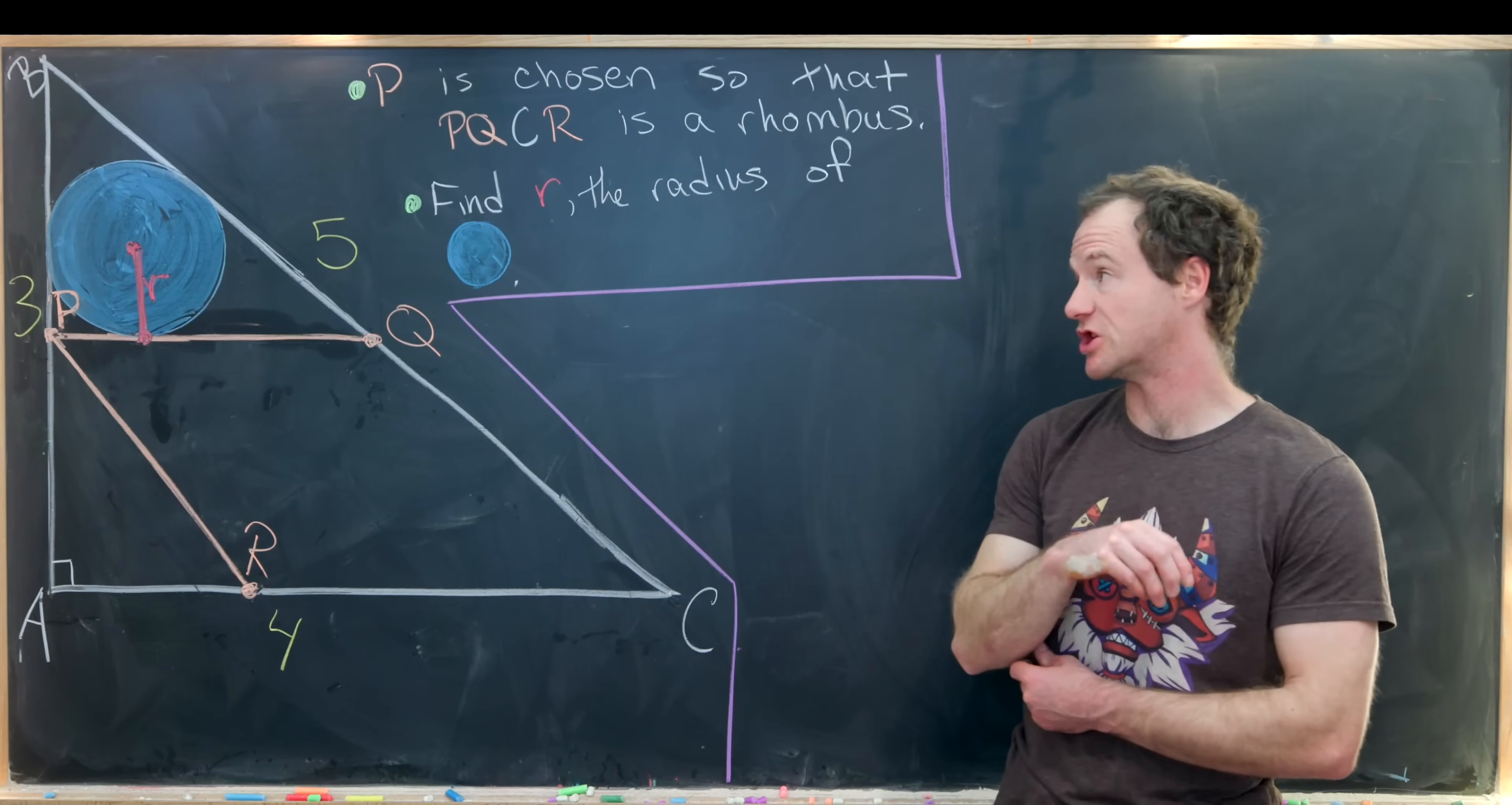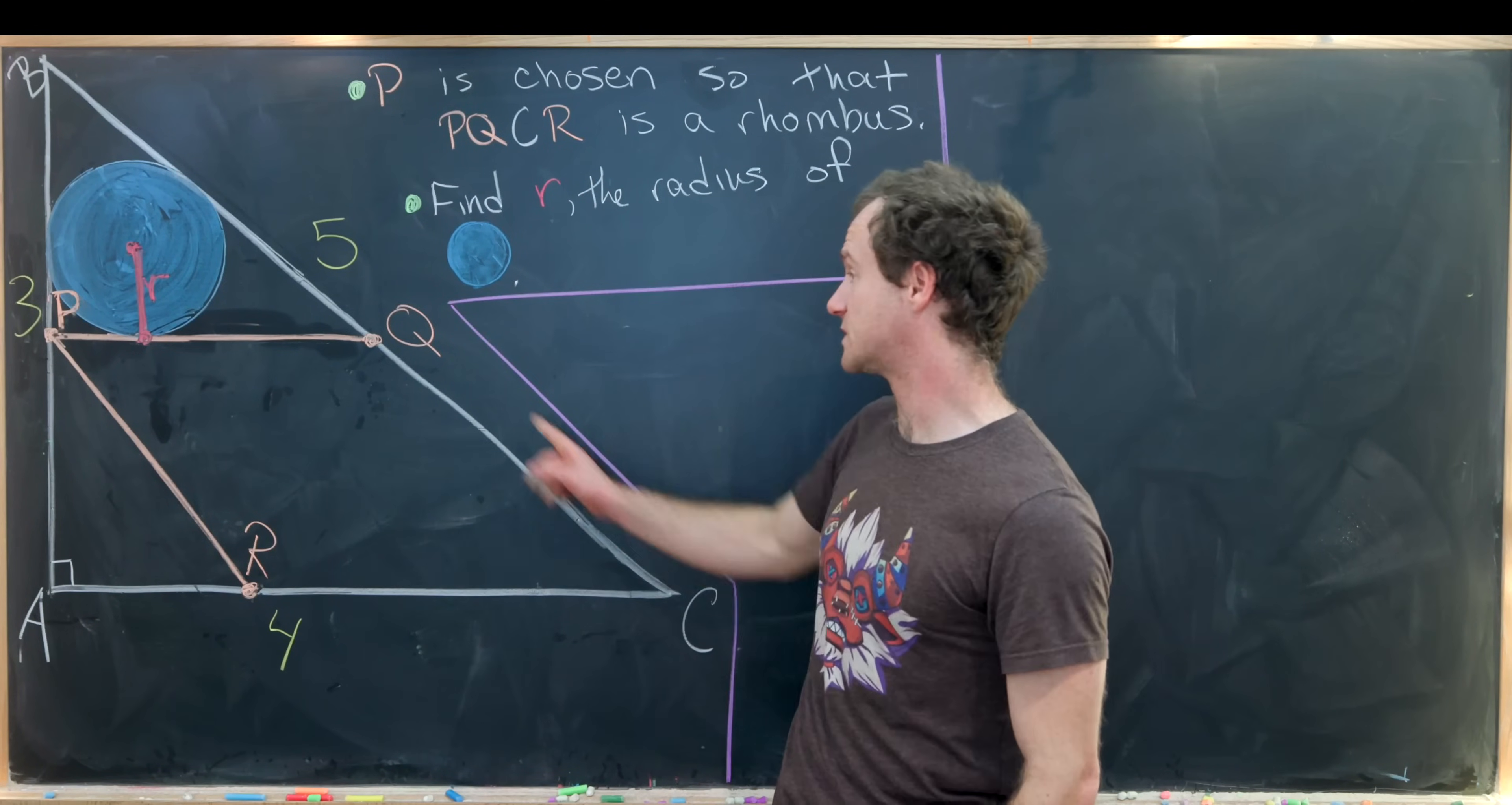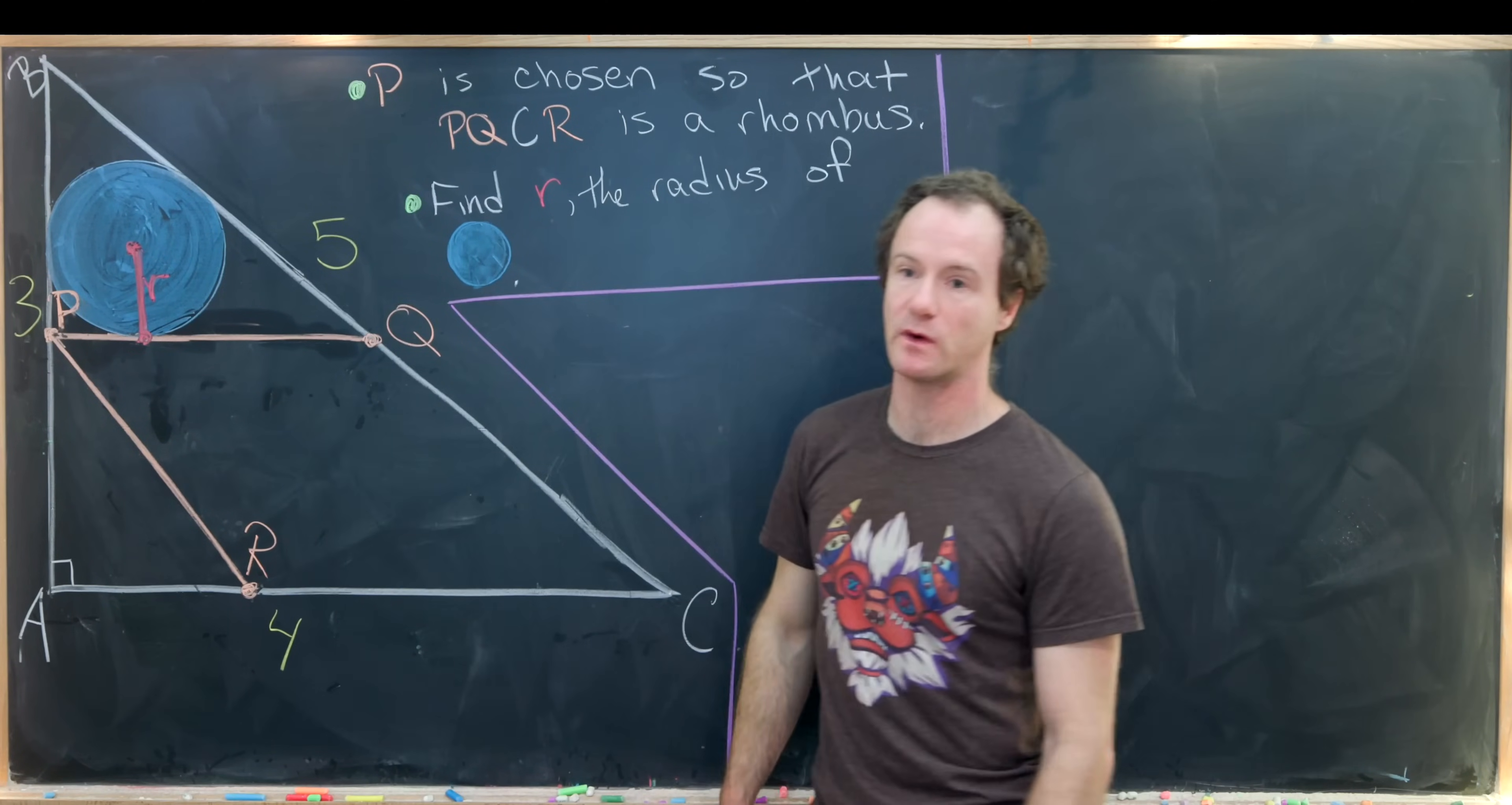Here I've got a nice elementary geometry problem. We're going to start with a 3-4-5 right triangle. Then on side AB, we'll pick a point P. On side BC, we'll take the point Q, which is along the ray starting at P, which is parallel to AC. And then we'll finish this off by picking R that completes this picture into a rhombus.